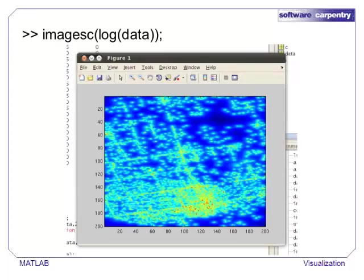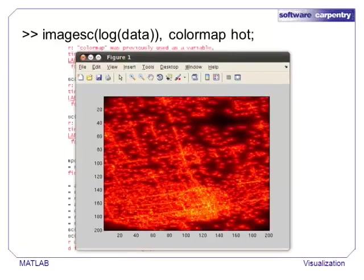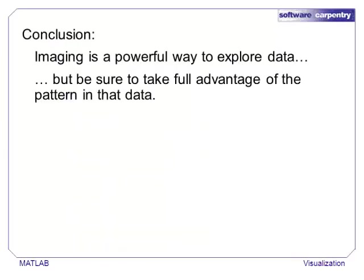Imaging the logarithm of our data, we see a much more interesting pattern. We can pick out major streets and public areas in this plot. Depending on the data, it might be worth trying other color maps. This color map is grayscale, and lighter values correspond to higher intensities. Color map hot uses a black to yellow heat map. In conclusion, plots and images are powerful tools to explore data, but be sure to take full advantage of the pattern that is in the data. Sometimes, you may need to rescale or otherwise edit data to fully capture its meaning.